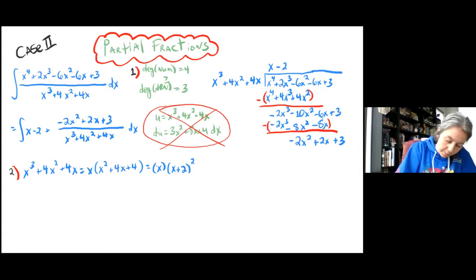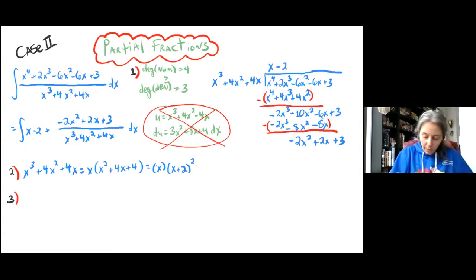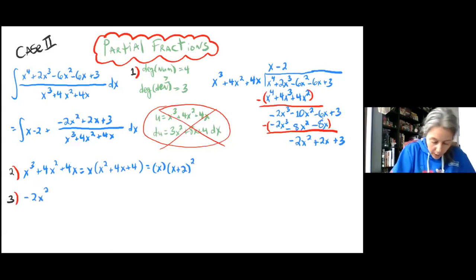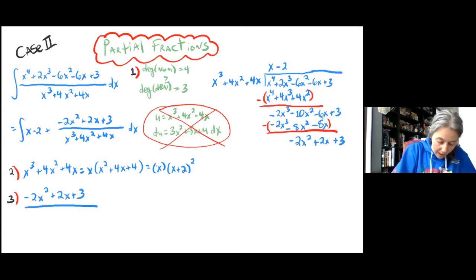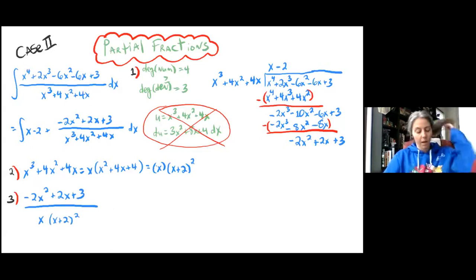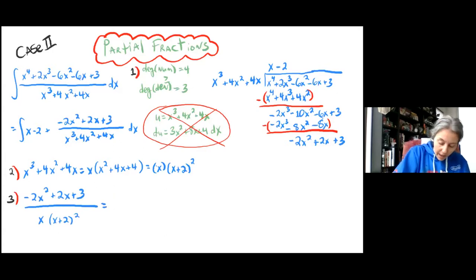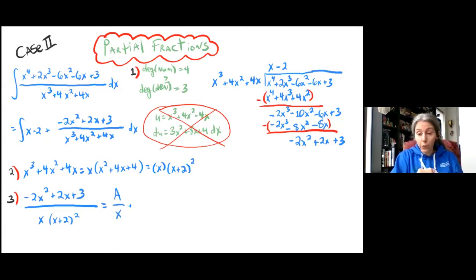This brings us to the third step: creating the partial fractions decomposition. We want to decompose (negative 2x squared plus 2x plus 3) over x times (x plus 2) squared. That x is a linear factor occurring one time, which means it gets one fraction: A over x. And x plus 2 is also a linear factor.